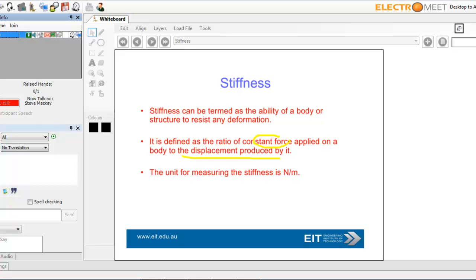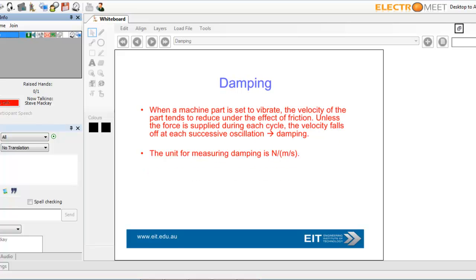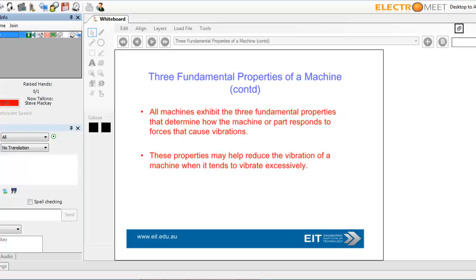Mass obviously is in kilograms. Stiffness is the ratio of a constant force applied to the body to the displacement produced by it. In other words, if you have a particular force and the displacement is greater and greater, the stiffness can be assumed to be less. A typical unit for stiffness is newtons per meter. Damping is newtons divided by meters per second.